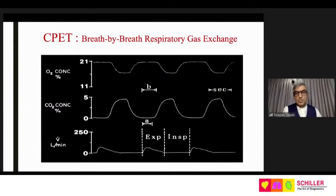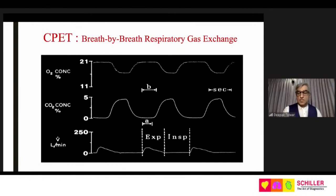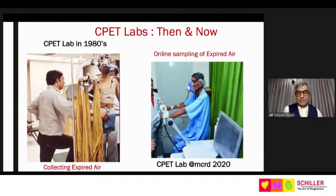CPET is totally different from leisurely tests like the six-minute walk test, where the patient exercises on their own will and is not stressed to exhaustion. This test must continue until the patient says they cannot do more. At that point, we determine: is it a ventilatory problem, a cardiac problem, a circulatory problem, or a problem at the level of the muscle or mitochondria? The test used to require collecting gas into large bags for 10 minutes, filling entire rooms. Now we have online analyzers that continuously sample breath by breath.